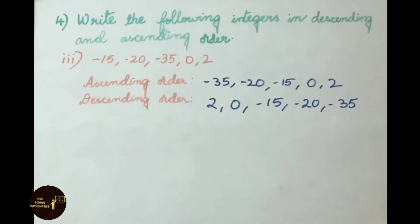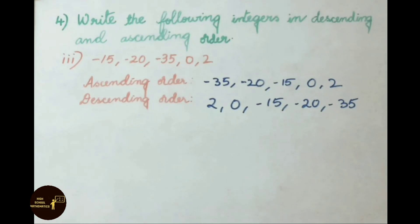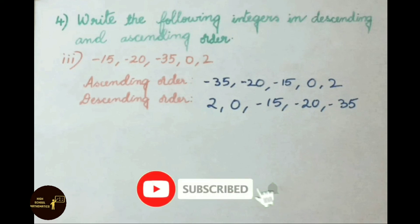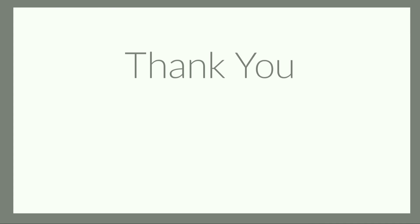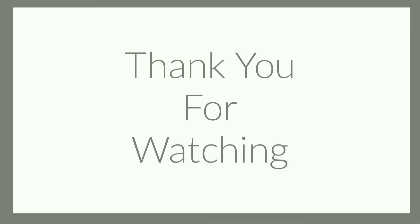Today we have seen Class 7 AP State CBC syllabus, first chapter Integers, review exercise questions 1 to 4. Hope you all liked this video. If you liked it, please like, share it with your friends, and subscribe to our channel. Thank you for watching.